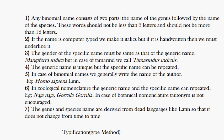For instance, Periplaneta americana is the scientific name of cockroach, where 'americana' refers to America. And homo sapiens is not location-specific — 'homo' represents man and 'sapiens' means wise, so homo sapiens means wise man.